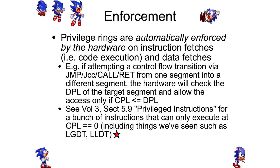When it comes to privilege enforcement, the rings are actually hardware enforced, as we said at the very beginning, and the hardware is going to enforce it when particular things are happening, such as instruction fetches — meaning code execution — and data fetches — meaning just reading and writing data.